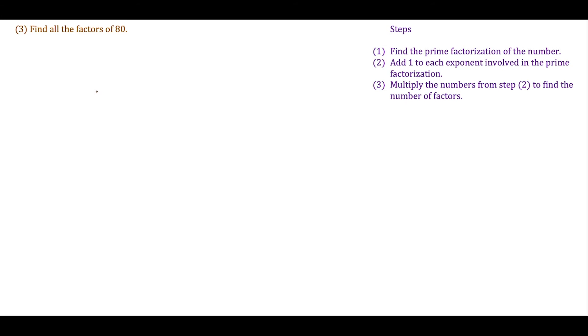For this last question, we're finding all the factors of 80. We start with prime factorization. 80 breaks down as 8 times 10. Then 8 breaks down as 2 times 4, and 4 breaks down as 2 times 2. Here are all the prime factors for this string. 10 breaks down as 2 times 5. We've completed the prime factorization. We have four factors of 2 and one factor of 5.